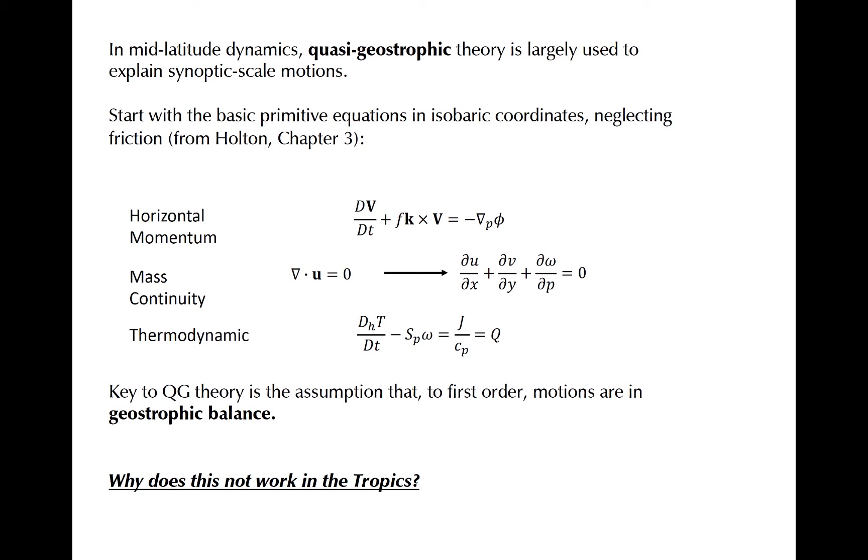One of the first things you learn in mid-latitude dynamics is that the atmosphere is approximately in geostrophic balance above the boundary layer. This means that the Coriolis force balances the pressure gradient force. This assumption can't be made in the tropics, however. Why not?